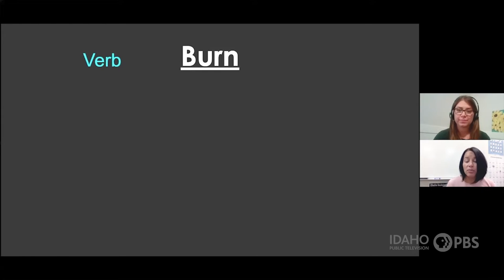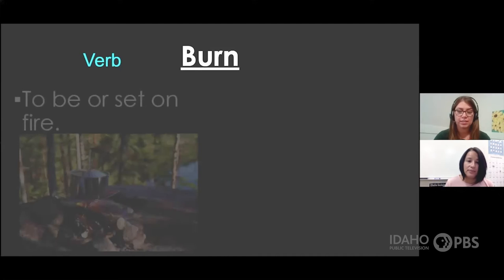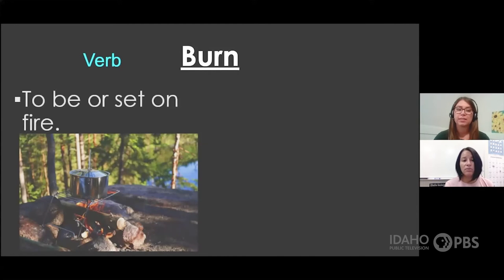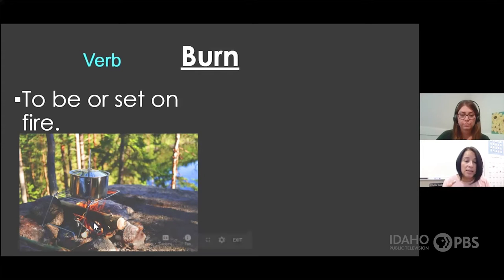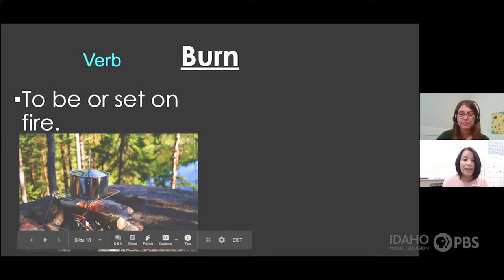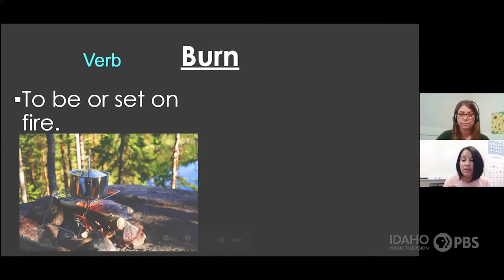Burn can be a verb, and a verb is an action word — something that you do. When we use it as a verb, it means to be or set on fire. We can burn things by setting them on fire, or when they are on fire, they burn. The wood here in this picture is burning because the flames are on the logs of wood — the logs of wood are on fire, so they are burning.